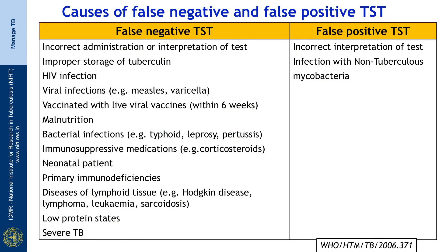You could have a false-negative tuberculin skin test even in an infected child. The commonest reasons include incorrect administration, improper storage of tuberculin, any immune deficiency such as HIV, primary immune deficiency, immunosuppressive drugs, severe malnutrition, or severe bacterial, viral, or mycobacterial disease. You could also have a false-positive test due to incorrect interpretation — reading erythema instead of induration — or because of infection by non-tuberculous mycobacteria.